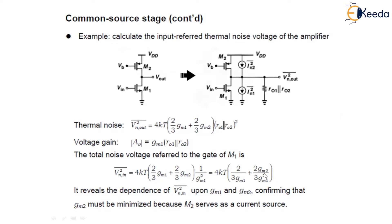This input-referred voltage is directly proportional to the transconductance of M2 and inversely proportional to the transconductance of M1. Therefore, GM2 must be minimized, since M2 serves as a current source. The transconductance of M1 can be increased to decrease the input-referred noise. This example shows how we can control the input-referred thermal noise voltage by the transconductance of the transistors.